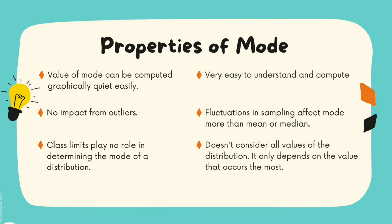What are the properties of mode? The mode value can be easily computed even through graphs — if you plot a bar graph or pictogram, whichever data has the highest concentration is your mode. And since mode is something which occurs most in the data set, and an outlier is something which happens just once in a while — a very small portion of your data set — mode is absolutely unaffected by outliers.